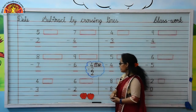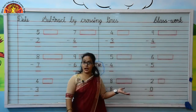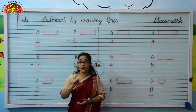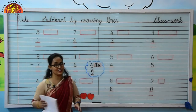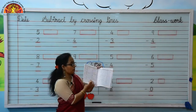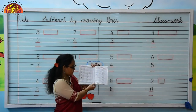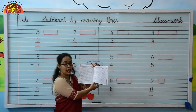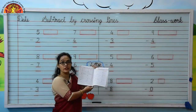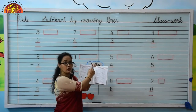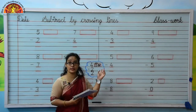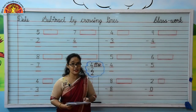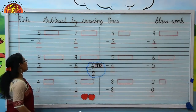So kids, let's do this exercise in your maths workbook 1. Check out your maths workbook 1, page numbers 80 and 81. Kids, don't forget to mention the date and classwork on both pages. Let's do this exercise. Check out your pencil.